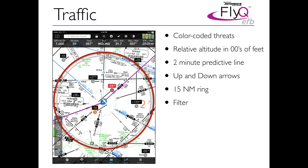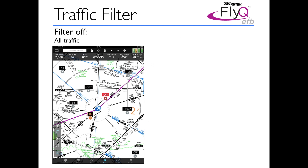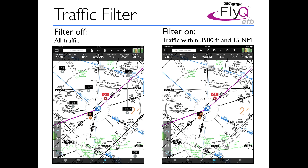We put an automatic 15 nautical mile ring around the system — a great way to know roughly how far away targets are. On top of the ring there's a switch to turn the traffic filter on and off. With the filter off, we see all traffic. When we turn the filter on, we only see two targets — those within 3,500 feet and 15 nautical miles of us. This uses the same relevancy criteria the FAA uses when deciding what targets to broadcast to an ADS-B out-equipped plane.